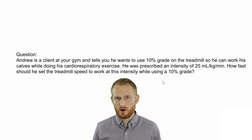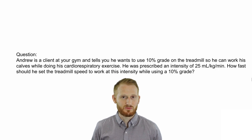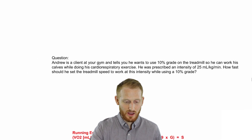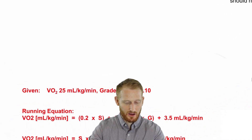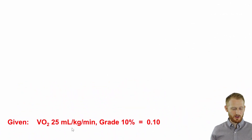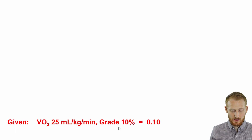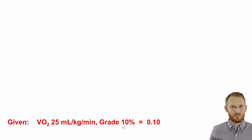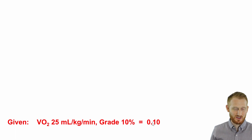Note that we don't know if he should be walking or running, so we'll have to make some decisions after doing both the walking and running equations to figure that out. Let's look at the variables given to us: 25 milliliters per kilogram per minute for the oxygen consumption rate, or the VO2. We have a grade of 10%, which I'm going to convert to a decimal right away. Divide 10% by 100 to get 0.10 — the decimal format for the grade — which you'll need for the ACSM equations.